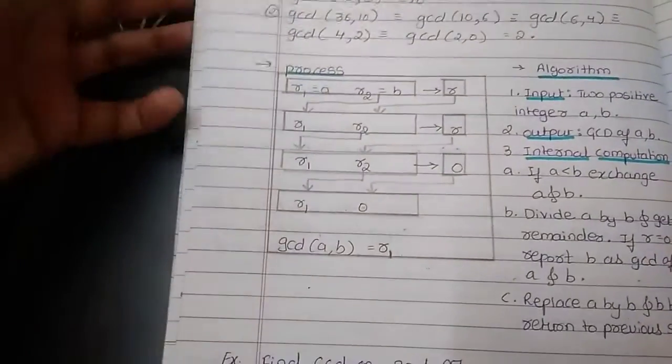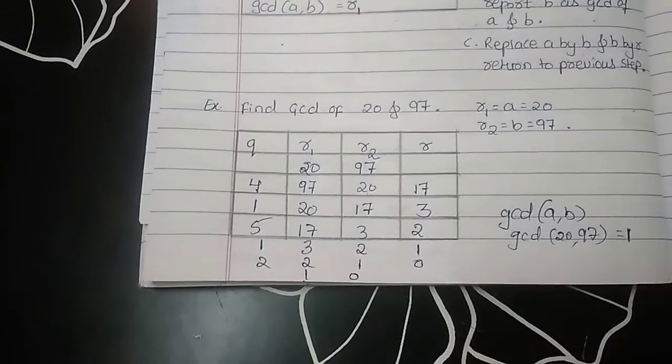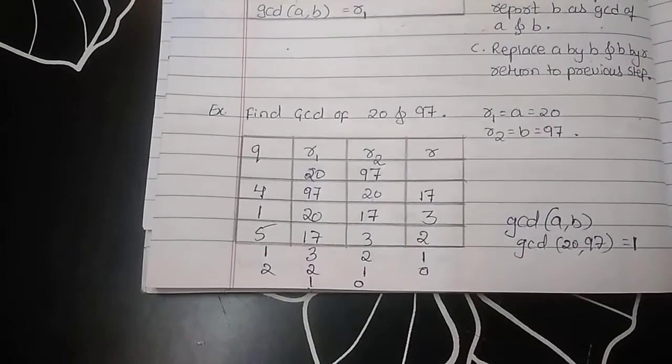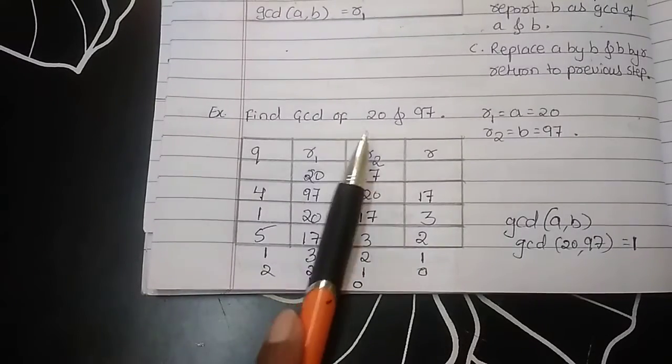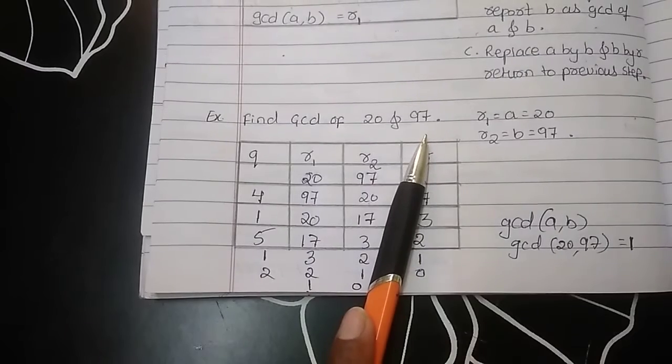If we see the algorithm of Euclidean algorithm, sorry, the example, this is the example what I have taken, already I have solved it. We need to find here the GCD of 20 and 97 by using Euclidean algorithm.